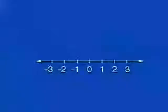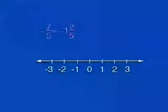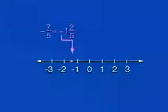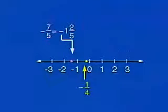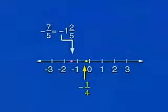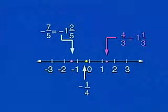Now let's explore how to locate rational numbers on a number line. Looking at minus seven-fifths, written as minus one and two-fifths, we can approximate its location. Minus one-fourth would be located right about there, and four-thirds can be written as one and one-third.